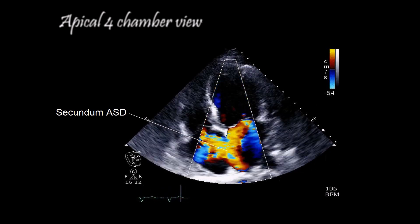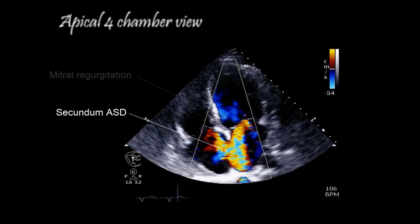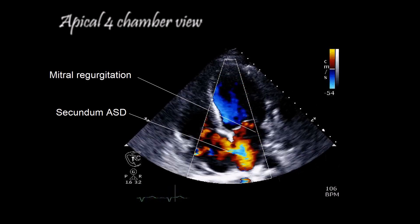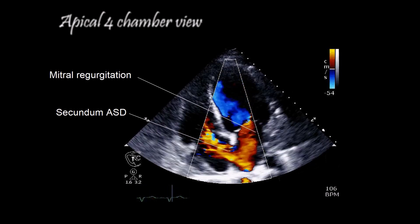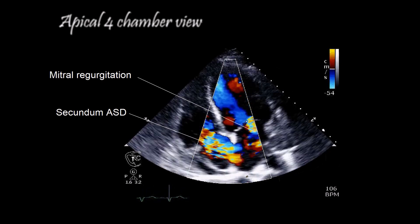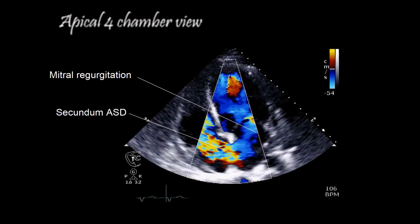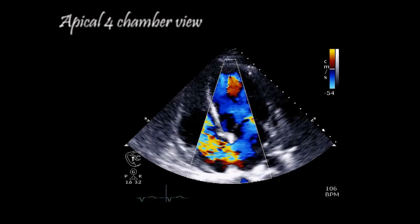Secundum atrial septal defects typically present as an isolated cardiac defect, though they may be contiguous with other types of atrial septal defects, and functional mitral valve prolapse, perhaps related to a change in left ventricular geometry associated with right volume overload.